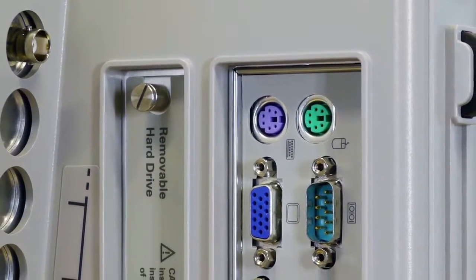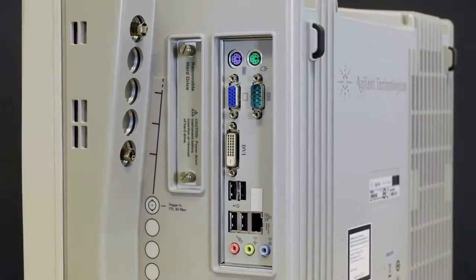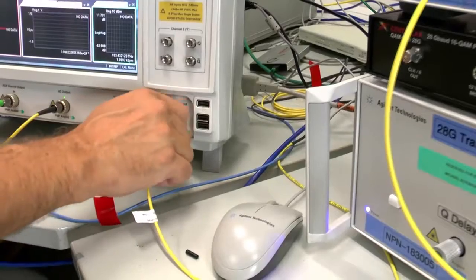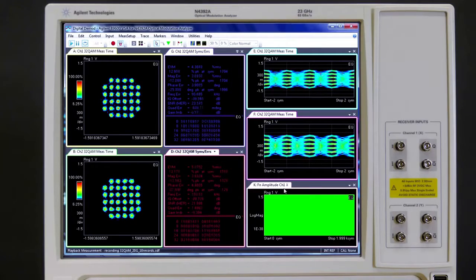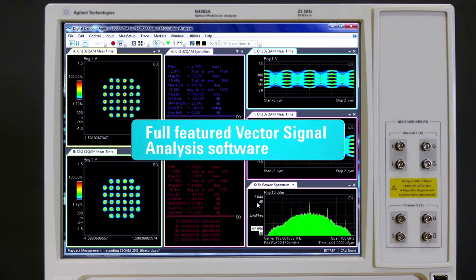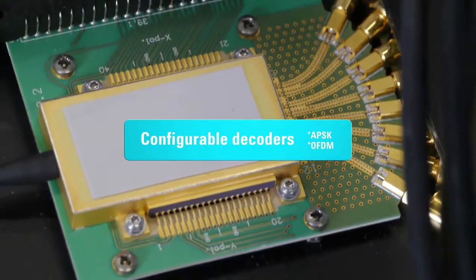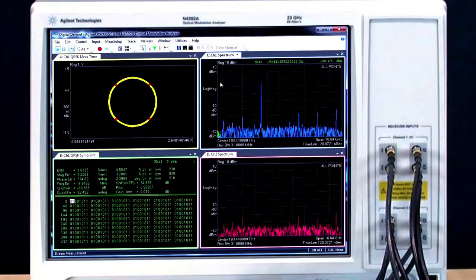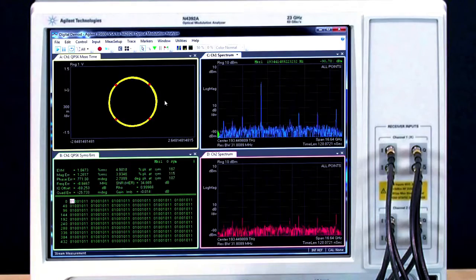The full-featured vector signal analysis software with universal modulation support enables deep analysis and great flexibility. This means the N4392A is effective in getting you the insight you need when verifying and debugging complex transmitters and receivers. For example, to test digital signal processing algorithms with reference instruments, or with new components or modules, or using the differential RF inputs to characterize integrated coherent receivers to evaluate vendors.